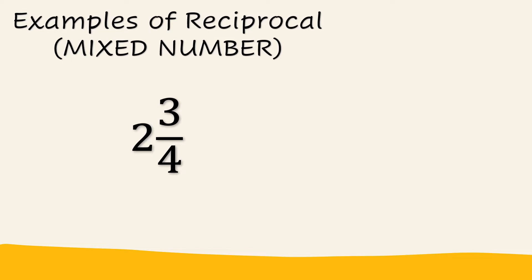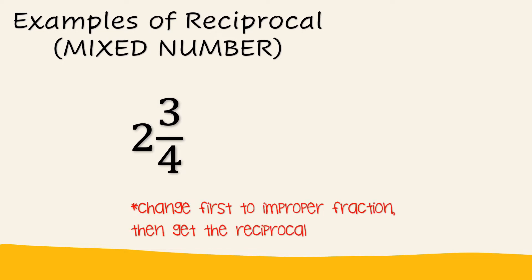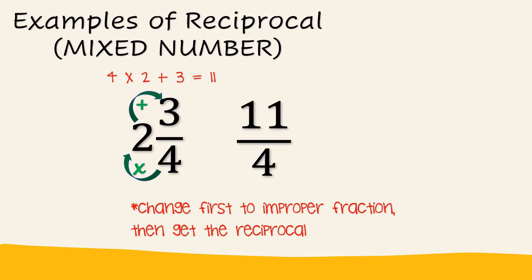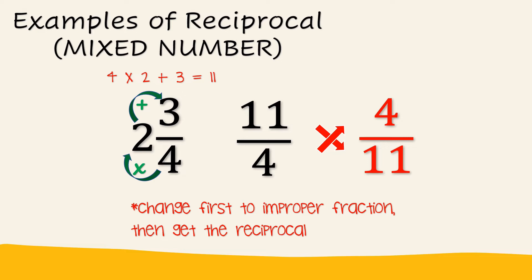As for the mixed number, we need to first change the mixed number into an improper fraction, and then get the reciprocal. To change a mixed number into an improper fraction, we multiply the denominator by the whole number, and then add the numerator. So that will be 4 times 2 plus 3, which equals 11. So the improper fraction for 2 and 3 fourths will be 11 over 4. To get the reciprocal, change the positions of the numerator and denominator, which will be 4 over 11. Therefore, the reciprocal of 2 and 3 fourths is 4 over 11.